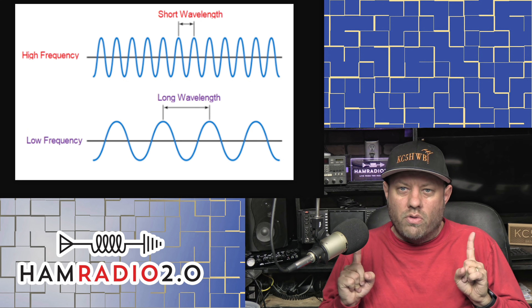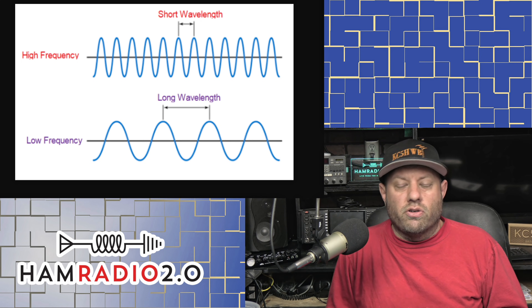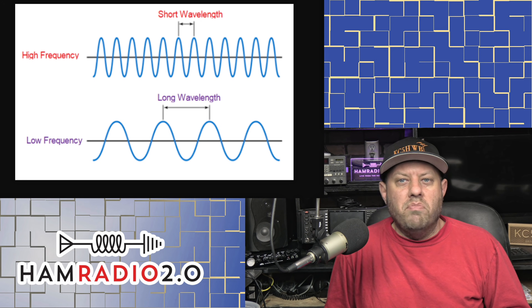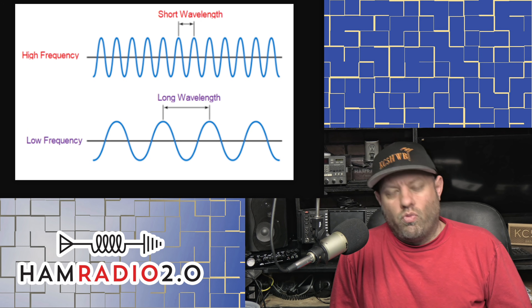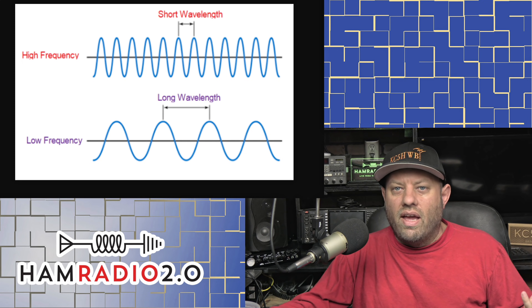The higher you get in frequency, the shorter the wavelength. When we say two meters, we're talking about a distance of two meters in the metric system. The way you calculate meters from wavelength — you'll learn this in your Technician test — is you take the frequency and divide it into 300. So if you take 440 megahertz and do 300 divided by 440, it's close to 70 — that's why we call it the 70 centimeter band. A perfect example is 10 megahertz: 300 divided by 10 equals 30 meters, the 30 meter band. And conversely, 300 divided by 30 equals 10 megahertz.